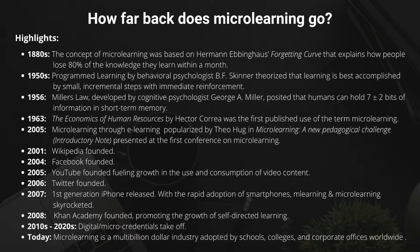The first published use of the term microlearning was in 1963 in the Economics of Human Resources by Hector Correa. In 2005, Theo Hug popularized the concept of microlearning in the context of e-learning through a presentation titled Microlearning: A New Pedagogical Challenge at the first conference on microlearning. Through the growth of social media in the 2000s — apps and sites like Wikipedia, Facebook, YouTube, Twitter, Khan Academy — these ushered in an era of social learning. The release of the iPhone in 2007 prompted the rapid adoption of smartphones, leading to the skyrocketing of mobile learning and microlearning.